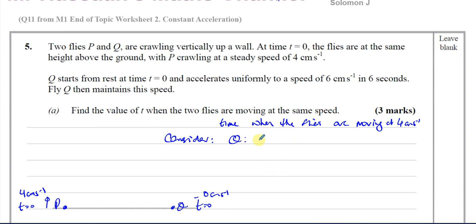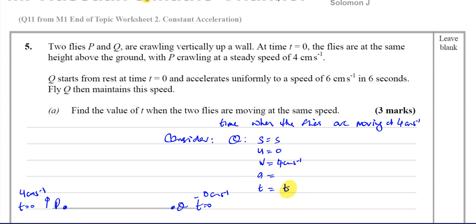If we think about Q, it's going at constant acceleration, so let's think about SUVAT. We don't know the distance S. We know its initial speed U is 0. We want the final speed V — that's 4 cm per second. We want to find the time T. The acceleration we can find: we know it goes 6 cm per second in 6 seconds, so the acceleration is 1 cm per second squared.